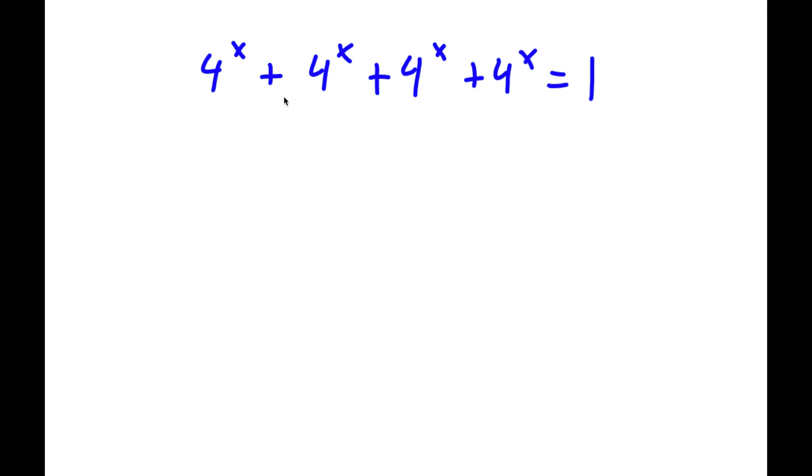Alright, so I have 4 to the power of x plus 4 to the power of x plus 4 to the power of x plus 4 to the power of x, and this is equal to 1.